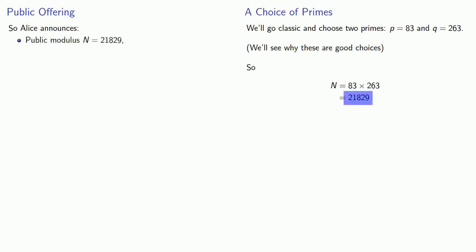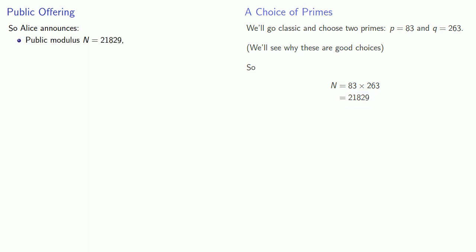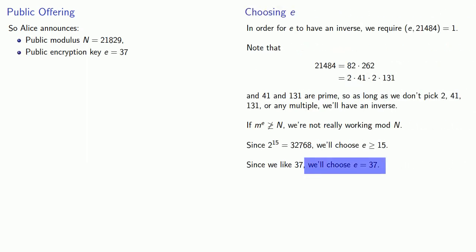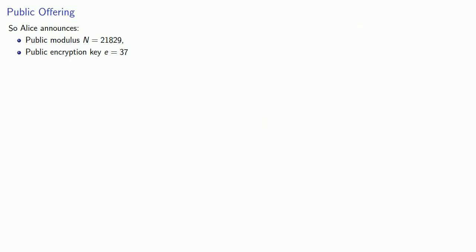And so now we're ready to announce our public key cryptosystem. Alice announces the public modulus, n equals 21829, and the public encryption key, e equals 37. What she keeps secret, she tells no one, is that 21829 is the product 83 times 263, and that the decryption exponent is 11613.